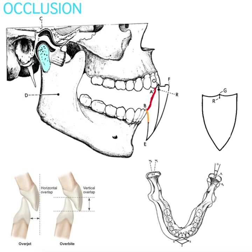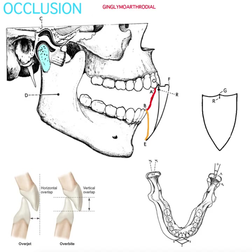The range from B to E represents extended opening, which has to do with translational movement within the upper synovial cavity. So in centric relation we see the hinging motion of the joint, and in extended opening we see the sliding motion of the joint. We refer to this as ginglymoardhrodial — meaning the TMJ is both a hinge and a sliding joint — and we can see both of those components in Posselt's diagram.